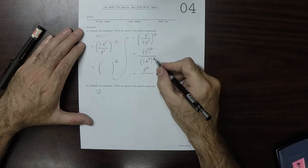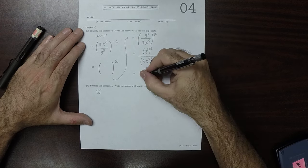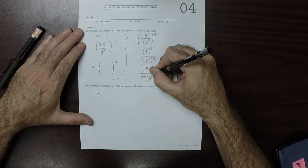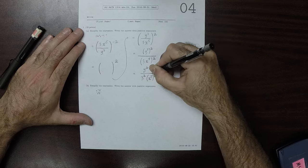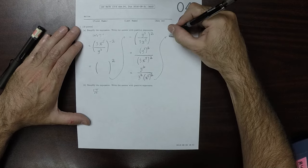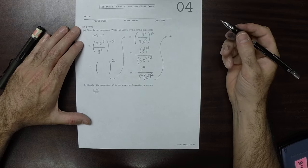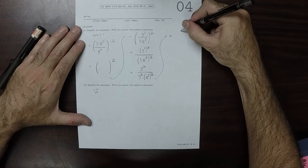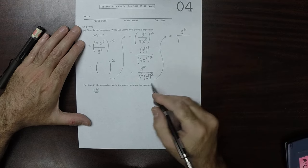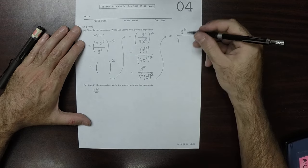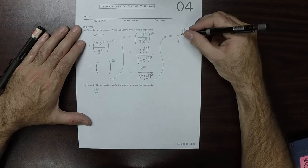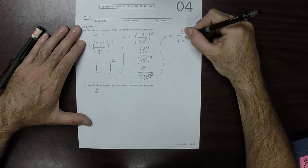So, now I'll distribute this square to these pieces. This would be 3 squared, and then x to 5 squared. And 3 squared is 9. And x to 5 to 2, that's iterated exponents combined with multiplication. So, that's x to 10.